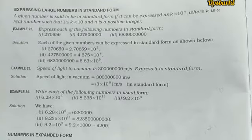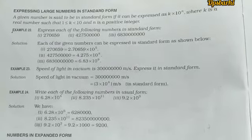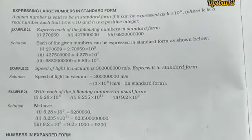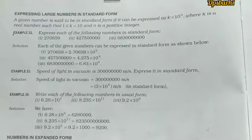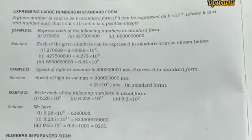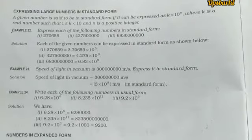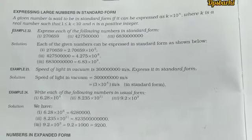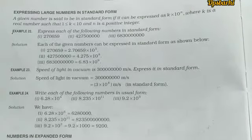We are going to start expressing large numbers in standard form. A number is said to be in standard form if it can be expressed as k × 10 to the power n, where k is a real number such that 1 ≤ k < 10, and n is a positive integer.